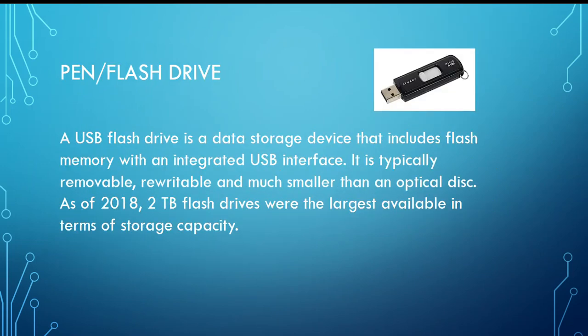Now what is a pen drive or flash drive? Here you can see the picture of a pen drive. A USB flash drive is a data storage device that includes flash memory with an integrated USB interface. It is typically removable, rewritable, and portable, and much smaller than an optical disk. It can store up to 2 TB of data — that's fantastic!